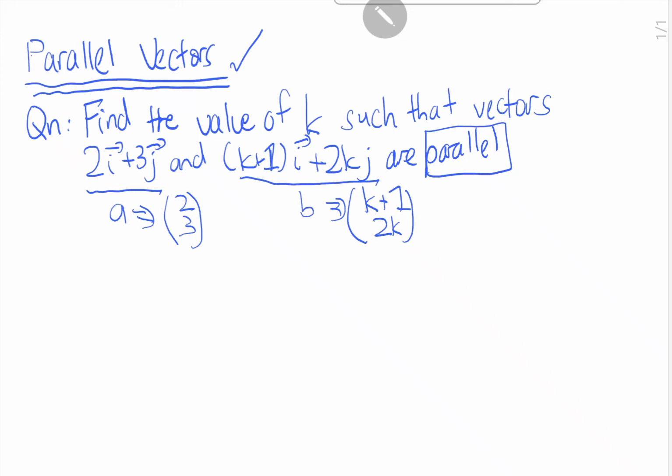This means that A and B, vector A and B are scalar multiples. Which means that we can write lambda A equals B, in which lambda is a scalar number.